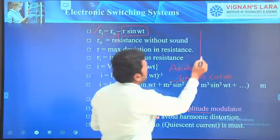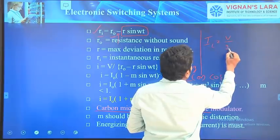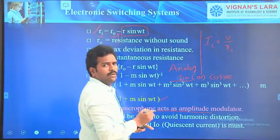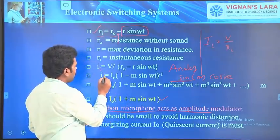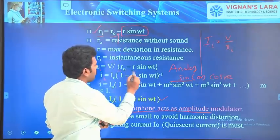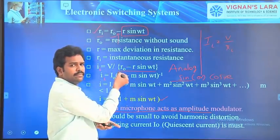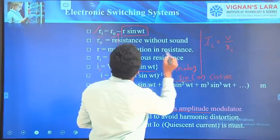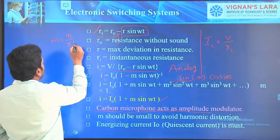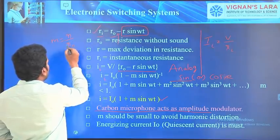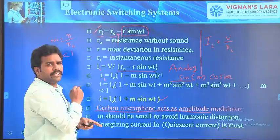Now, how to find instantaneous current? Ii is equal to V divided by RI. We know that current equals voltage divided by resistance. So RI is nothing but R0 minus R·sin(ωt). If we take R0 common, we get a factor M, where M is equal to R divided by R0. Since R is less than R0, the value of M is always less than 1.